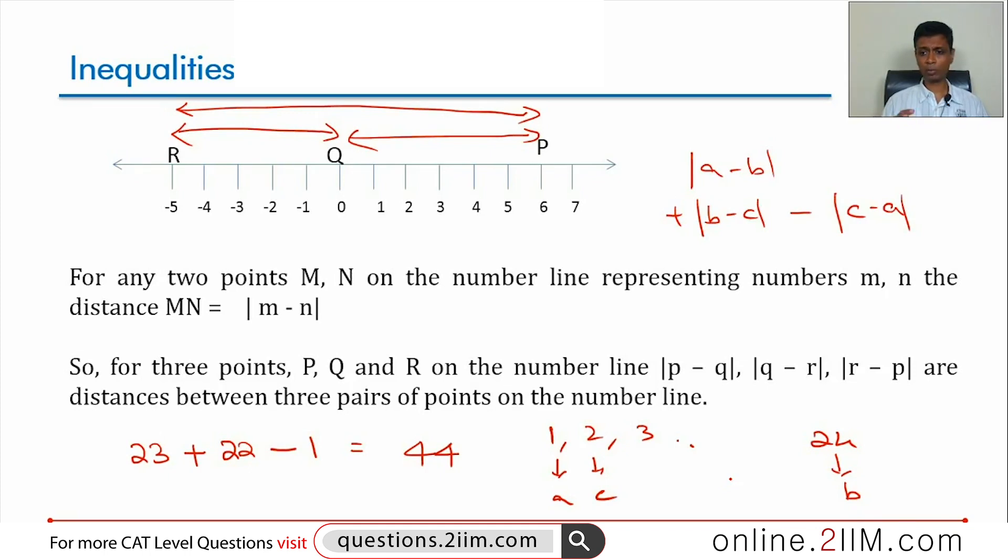It is a wonderful question to play with that idea. Modulus of A minus B is the distance between A and B on the number line. Once you crack that, then you are saying two distances should be very high. One distance should be very small. Play with that and then you are through.